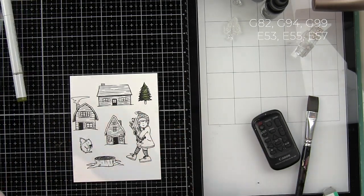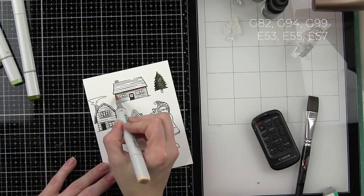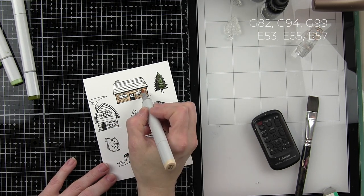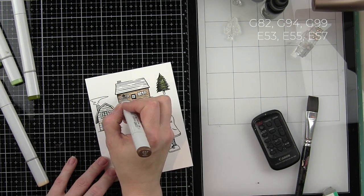I've shown the marker colors I'm using in the upper right corner of the screen while I'm coloring in my images. I've left all the coloring in but have sped up the video to save some time today.